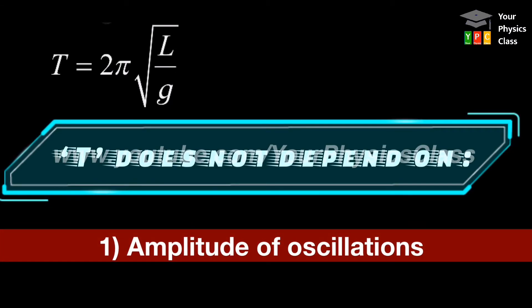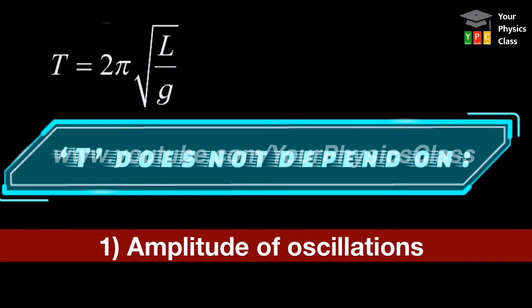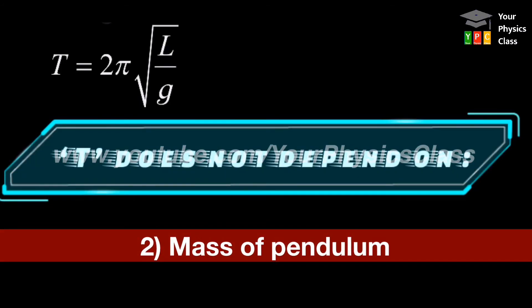If the amplitude of oscillation is 10 cm and time period is 2 seconds, then this 2 second time period will be same even if the amplitude of oscillation is doubled or tripled. Second point, it does not depend on mass of the bob.